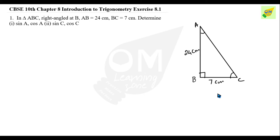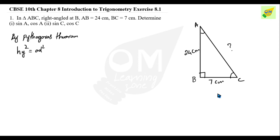BC is 7 cm. Now we need to find the hypotenuse. We don't know the hypotenuse yet. We use the Pythagoras theorem. According to the Pythagoras theorem, hypotenuse squared is equal to adjacent squared plus opposite squared.